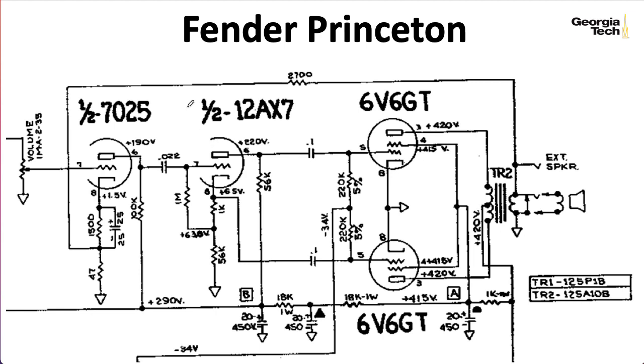So here in the Fender Princeton, we see this cathodyne stage consisting of a 12AX7 that has a coupling capacitor connecting its input to the output of a standard common cathode gain stage. And the non-inverting and inverting outputs of the cathodyne are capacitively coupled to the inputs of the beam tetrodes in the power output stage. Again, we'll look at all the stuff to the right of this line here later in the class.